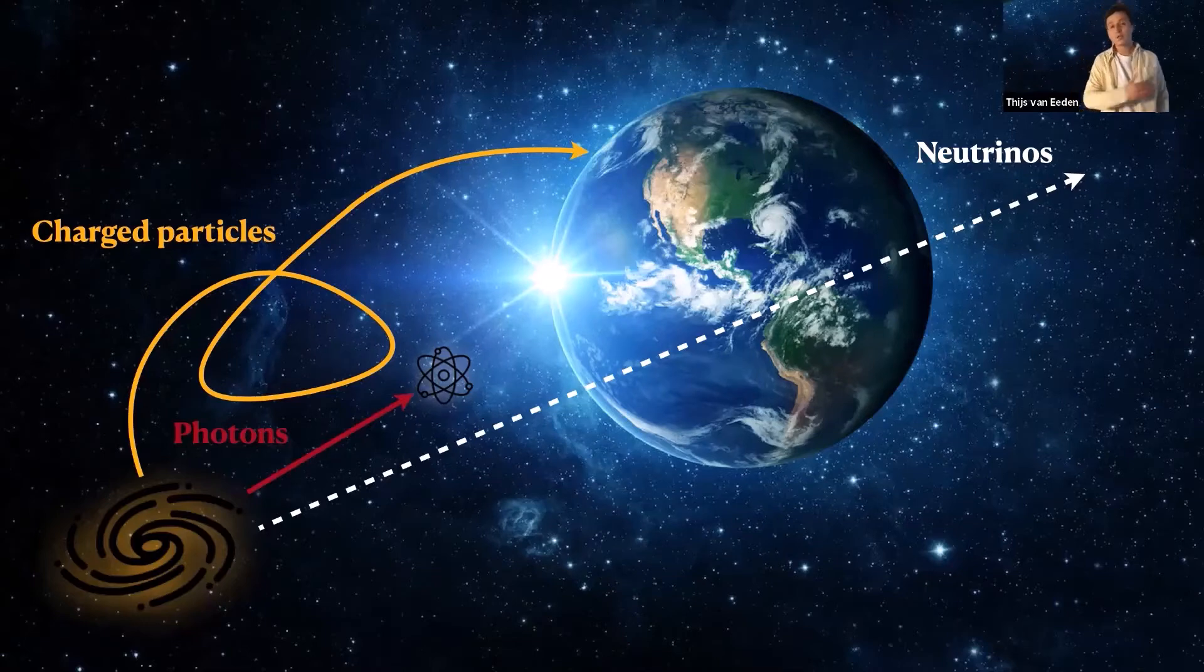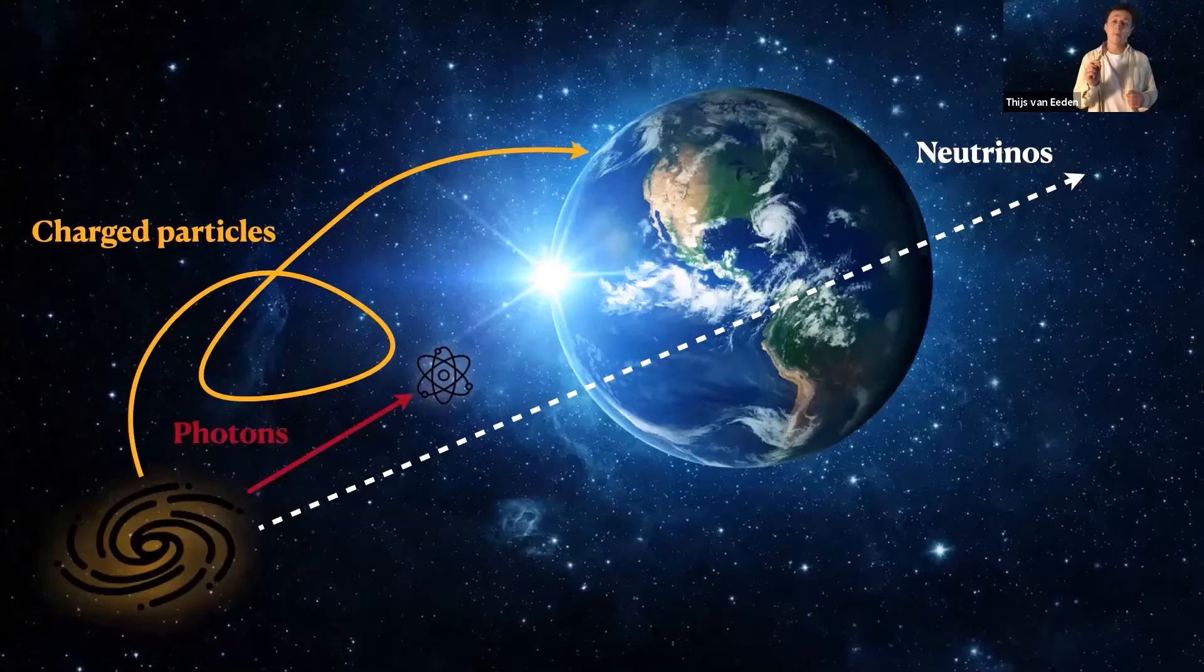The majority of neutrinos pass right through our planet. They pass through you, they pass through me, but one in a billion interacts.